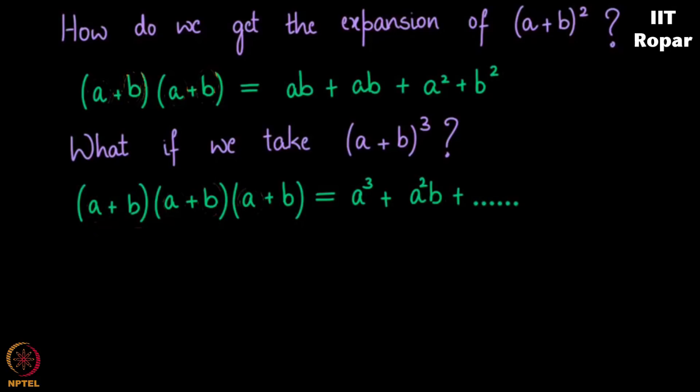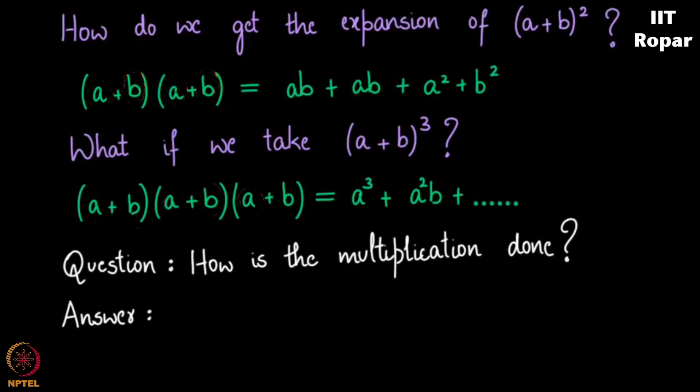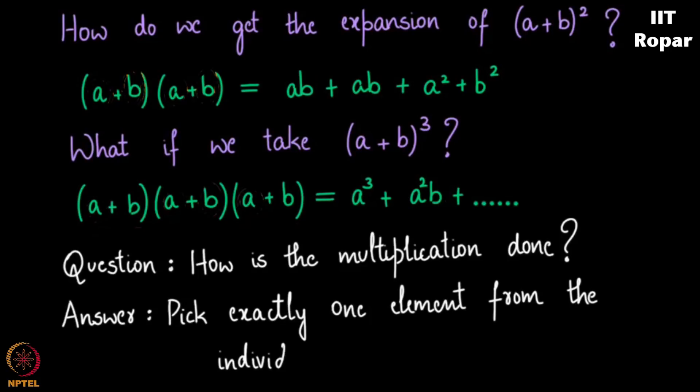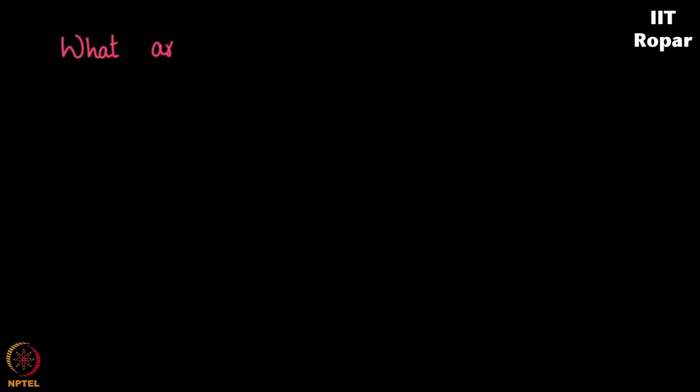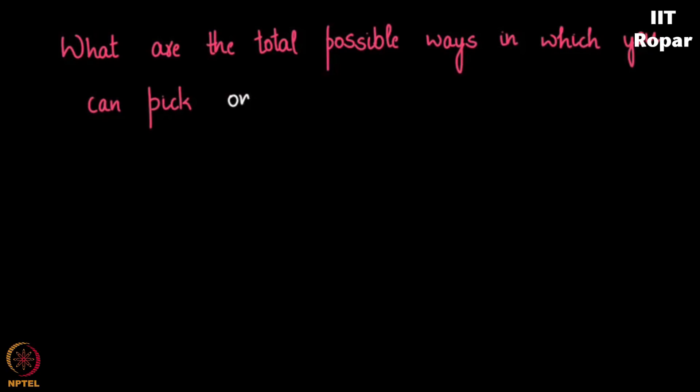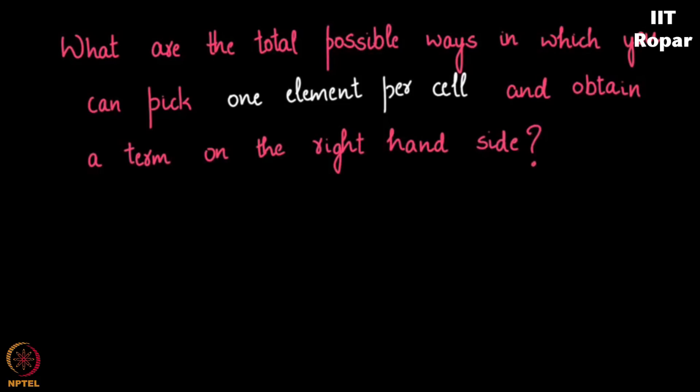The point to note here is not the answer on the right hand side. The point to note here is how exactly is the multiplication done? The answer is the multiplication is done by picking exactly one element from these individual cells, and you have three cells. What are the total possible ways in which you can pick one element per cell and obtain a term on the right hand side? So we all know the answer for this.